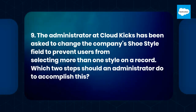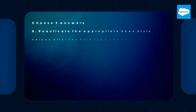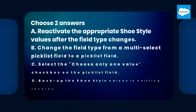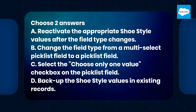Question 9. The administrator at CloudKicks has been asked to change the company's shoe style field to prevent users from selecting more than one style on a record. Which two steps should an administrator do to accomplish this? Choose two answers. A. Reactivate the appropriate shoe style values after the field type changes. B. Change the field type from a multi-select picklist field to a picklist field. C. Select the Choose Only One Value checkbox on the picklist field. D. Backup the shoe style values in existing records.